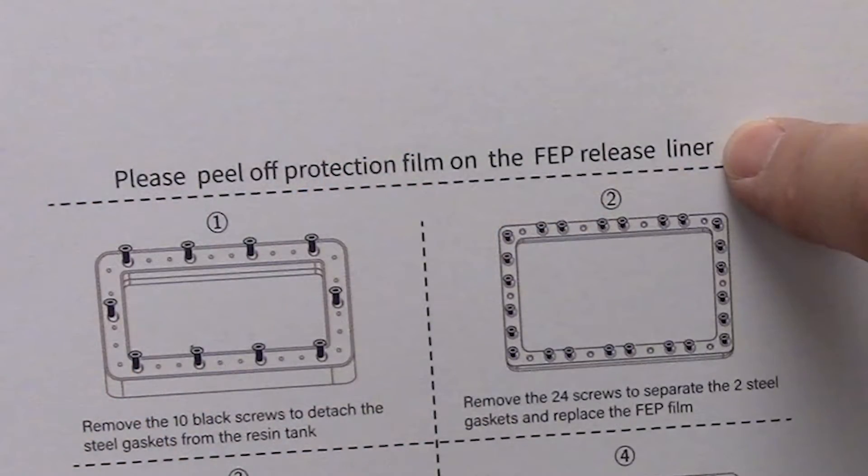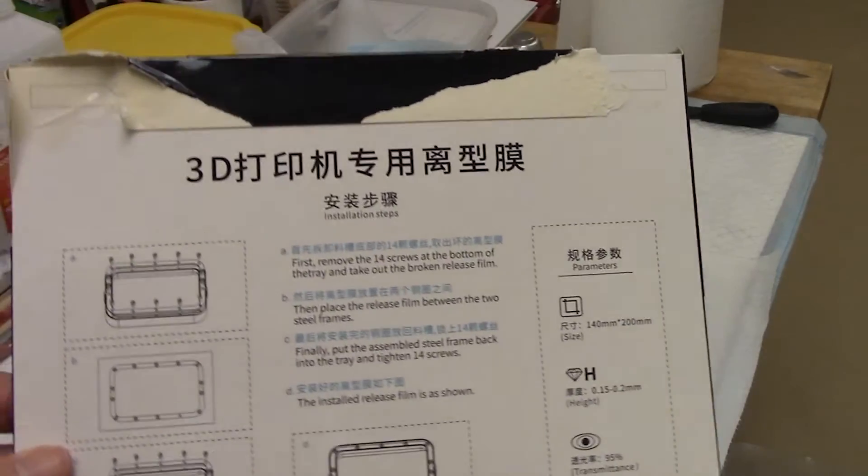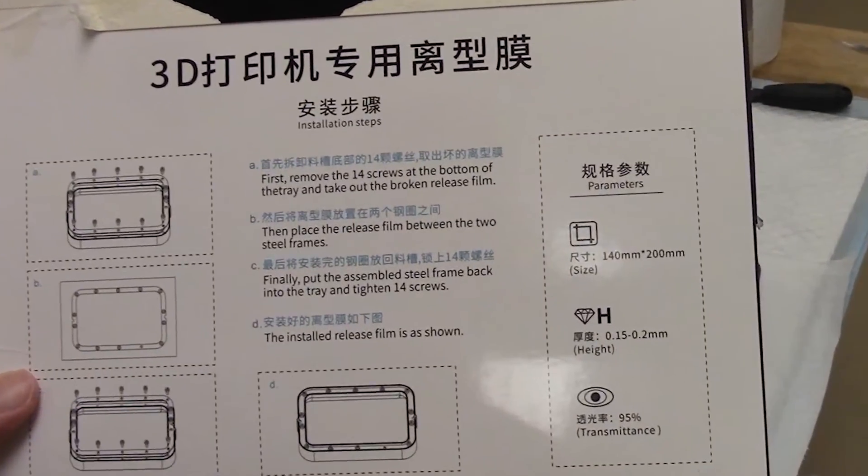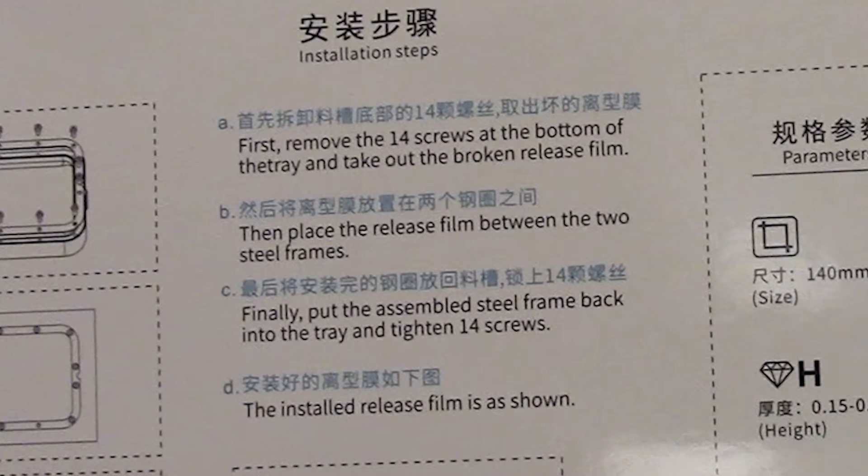I did some research online, and based on that, I looked at some replacement film I had bought from Elegoo, and it says this on the pack: Please peel off the protection film from the release liner. So I pulled the Creality package out of the trash and looked it over carefully, and there is nothing here about removing protective film, at least not in English.